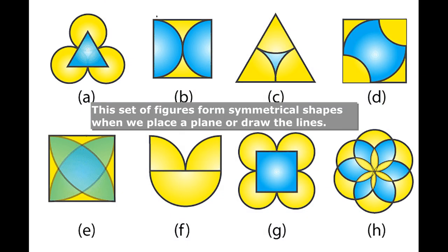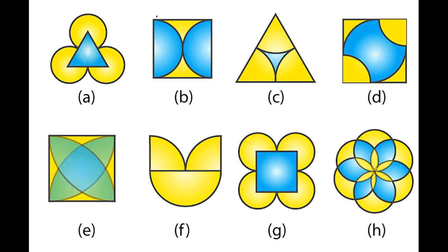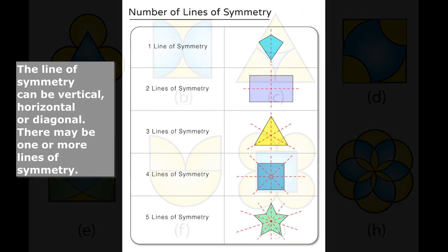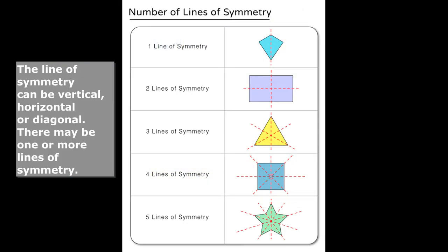This set of figures form symmetrical shapes when we place a plane or draw the lines. The imaginary line or axis, along which you can fold a figure to obtain the symmetrical halves, is called the line of symmetry. The line of symmetry can be vertical, horizontal, or diagonal.